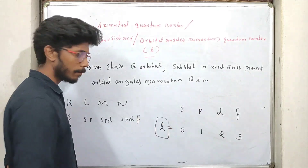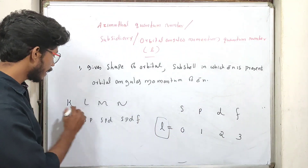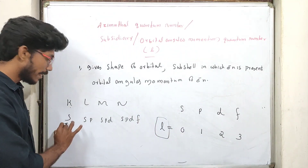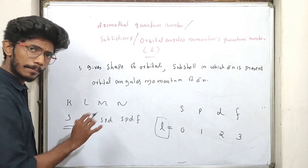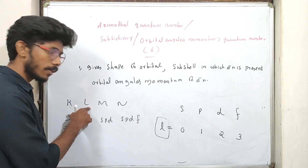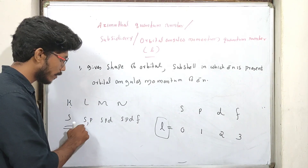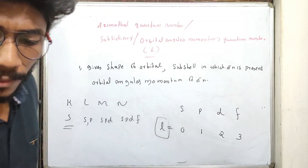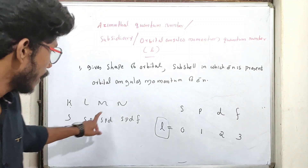When you first produce the S sub-shell, then P, D, F — and when you add shells, you include S, P, D, F sub-shells accordingly.